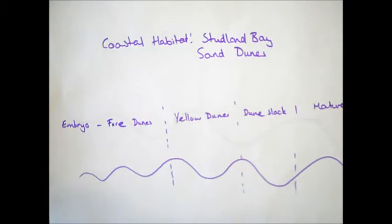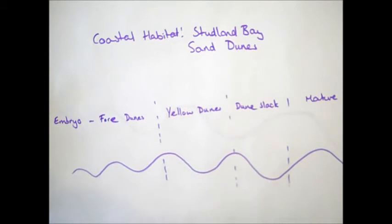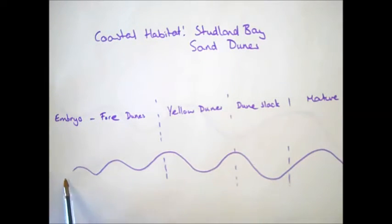What we're going to look at first is how vegetation changes, or something called the vegetation succession, changes as you move inland through the dunes system. First off, we need to think about the conditions that are going to change as you move through the dunes. So if we're starting down here close to the sea, and then moving inland over to here.